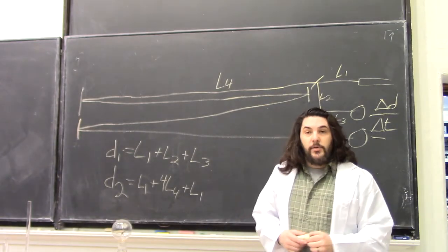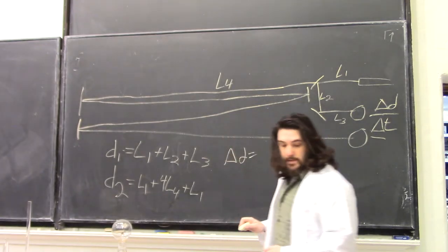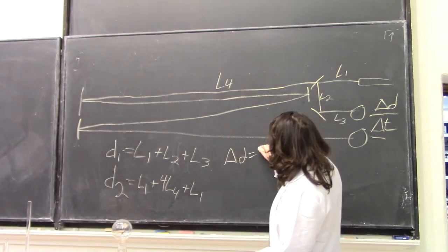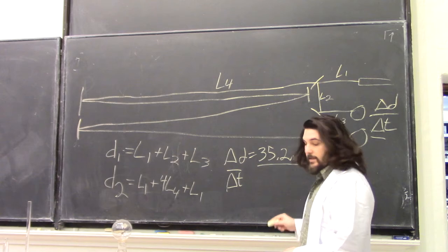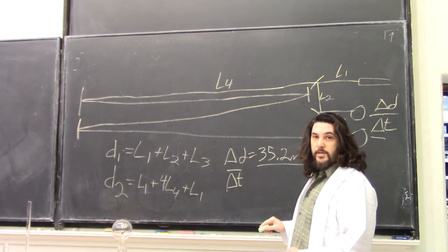If we plug in our numbers, we find that delta d is 35.2 meters. Our delta t is 126 nanoseconds.